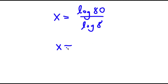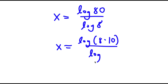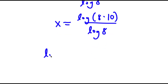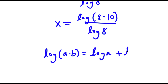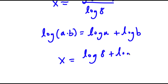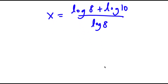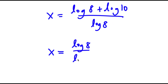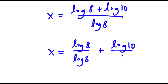Now log 80, I can rewrite as log 8 times 10, and I have this over log 8. And if I have something in the form log a times b, this is equal to log a plus log b. So log 8 times 10 is equal to log 8 plus log 10. Now I have this over log 8. This is the same thing as log 8 over log 8 plus log 10 over log 8.